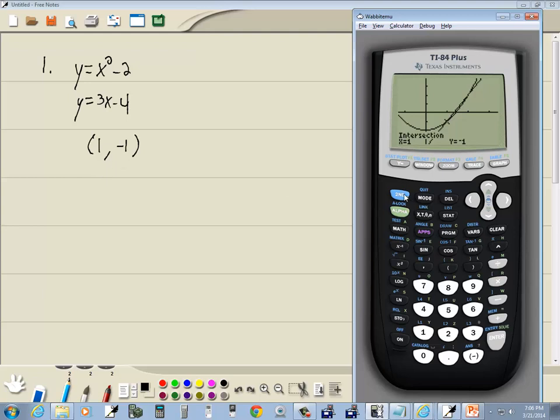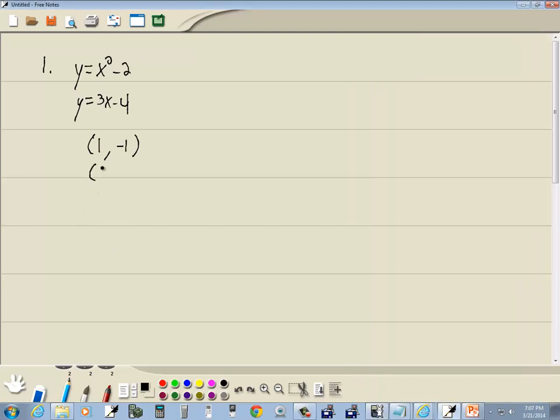Now for our second one. I'm going to do second trace, choose intersect, enter on first curve, enter on second curve. And I'll do my right arrow key, move it closer over here, the one I'm trying to find. It's got to be somewhere right up in here. And then I'll press enter. And it tells us our second one is 2, 2. Those are the values that cause these system equations, non-linear equations, to be true. If I put 1 in for x, that should give me a negative 1 in both of these. If I put 2 in for x, then that will give me a positive 2 for the y values.